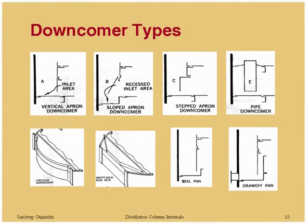Downcomer types include straight downcomer, sloped downcomer with restricted inlet area, step downcomer, pipe downcomer (for very low liquid handling capacities), circular downcomers, swept-back weir, seal pan, and draw-off pan.